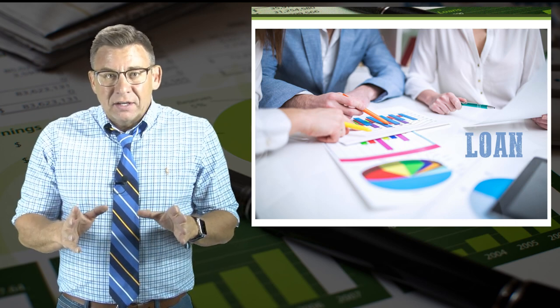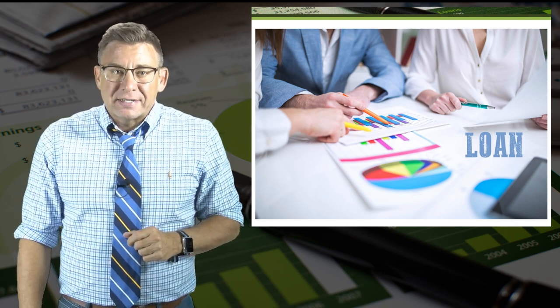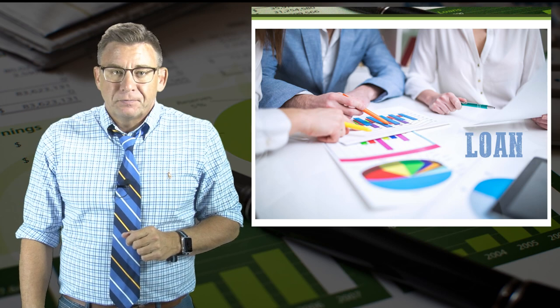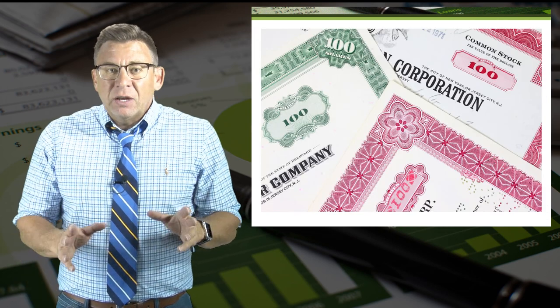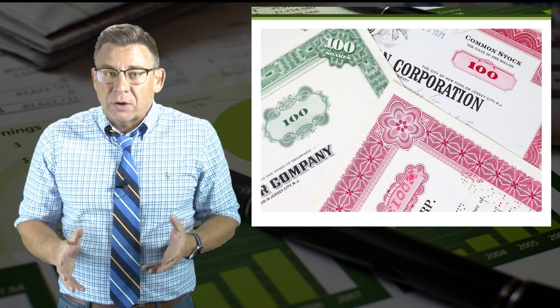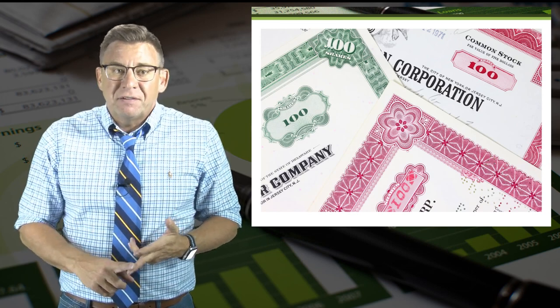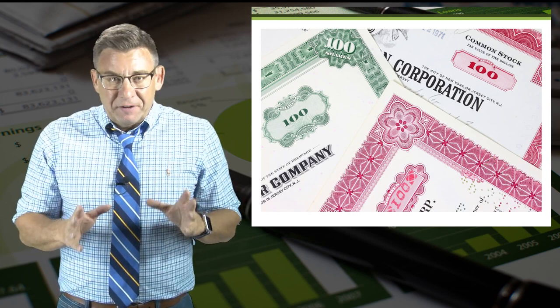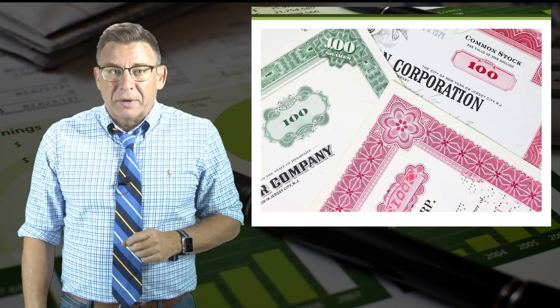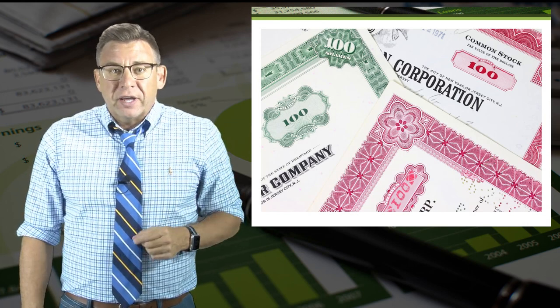Debt financing is one way companies pay for long-term assets. Finally, we will turn our attention to the accounting for stockholders' equity like the issuance of stocks and the payments of dividends. Equity financing is another way companies pay for long-term assets. Enjoy the journey — it's important stuff.